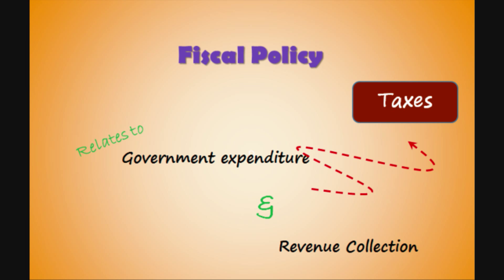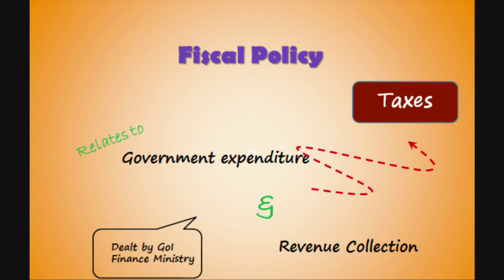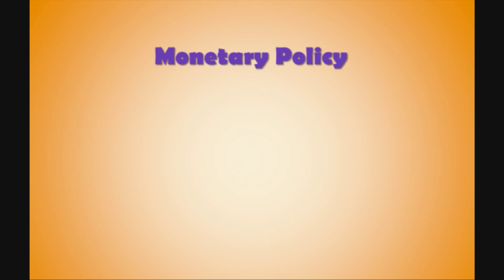The annual budget is in a way the government's statement of intent as to how it will spend money in the year to follow and how it plans to generate revenue. The body that handles fiscal policy is the government of India, and specifically the Finance Ministry.